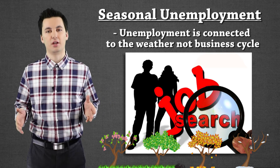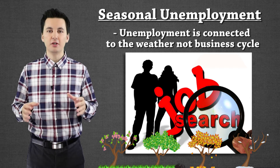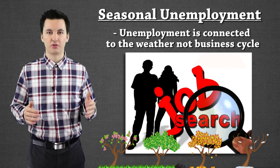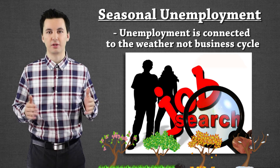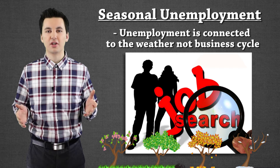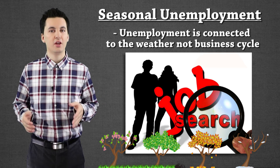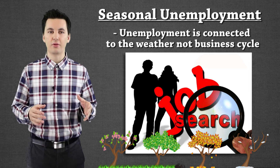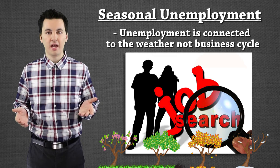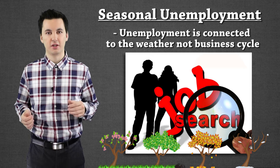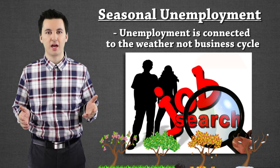Next, we have seasonal unemployment, which is different from cyclical unemployment. Cyclical unemployment follows the business cycle and could last three to five years because recessions can be hard to fix. Seasonal unemployment, however, is connected to the weather or the time of year. A Mall Santa is a perfect example — their job only exists around Christmas time.